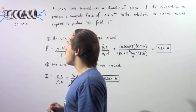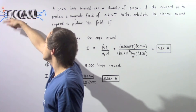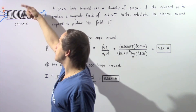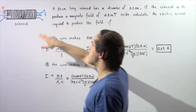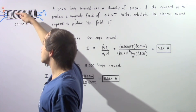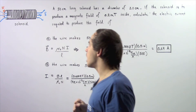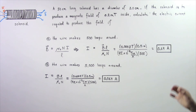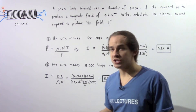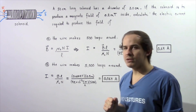Here we have our diagram of our solenoid — a continuous long conducting wire that makes some number of loops. In part A we have 500 loops and in part B we have 5,000 loops. An electric current inside the solenoid produces a magnetic field at the center, and we want to calculate the quantity of electric current required to produce this magnetic field in each case. Let's begin with part A.